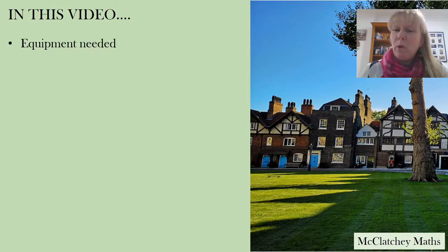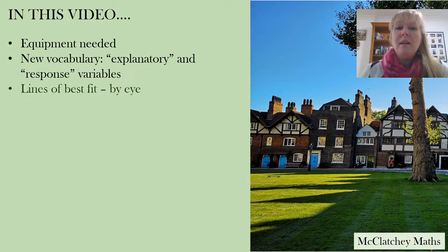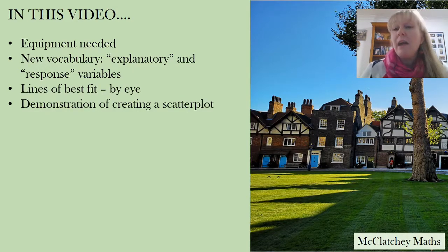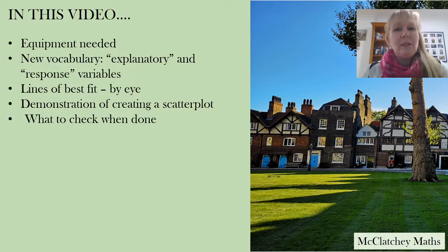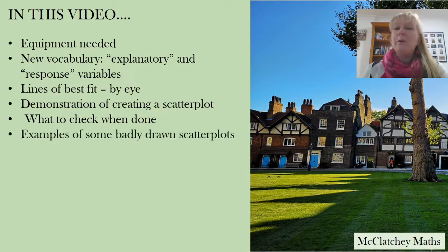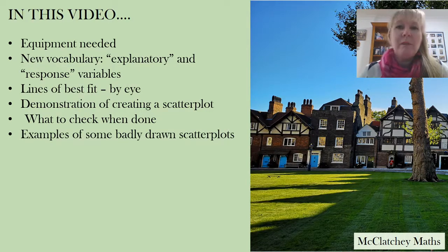Firstly we're going to talk about what equipment we need. We're going to talk a little bit about explanatory and response variables, what a line of best fit is, and then I'm going to show you how to draw a scatterplot and fit that line of best fit. We'll also look at some examples by students of some badly drawn scatterplots.